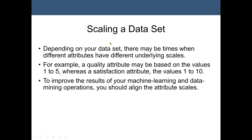The next step is scaling a dataset. Depending on the dataset, different attributes may have different scales — for example, quality attributes based on values 1 to 5, whereas satisfaction attributes use values 1 to 10. To improve machine learning results, you should align the attribute scales.